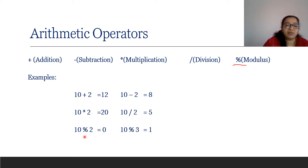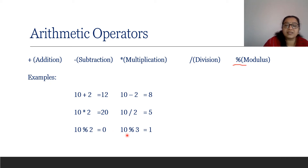But this is a new one — the modulus operator. How to get the remainder? Remainder means 10 divided by 2 — find out the remainder. The quotient is 5 and the remainder is 0. So we get the answer 0. One more example: 10 mod 3. Three 3's are 9, so the quotient is 3 and the remainder is 1.